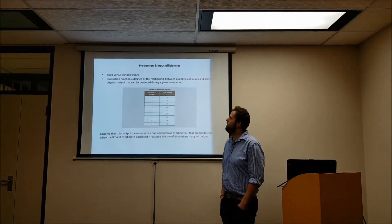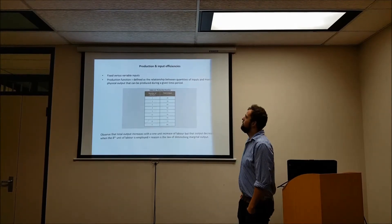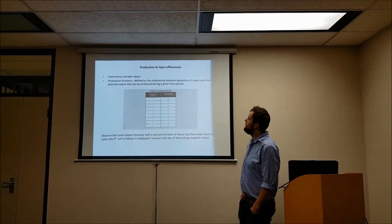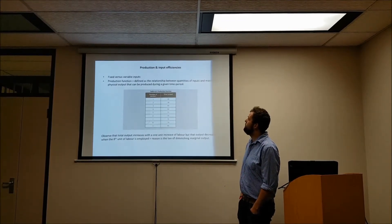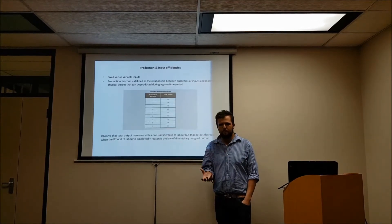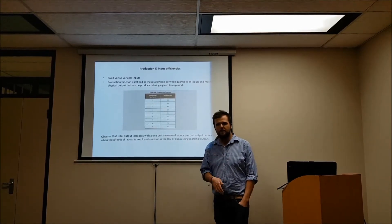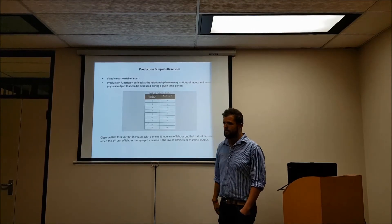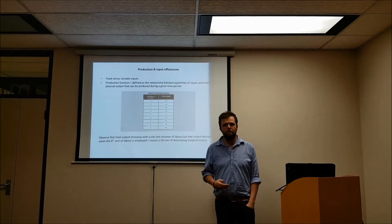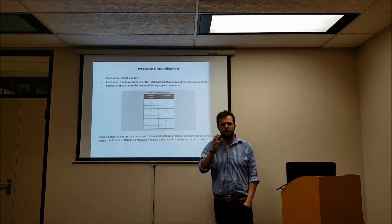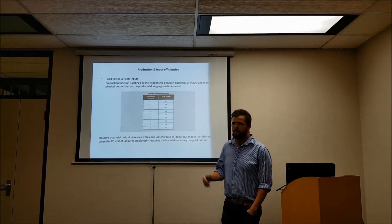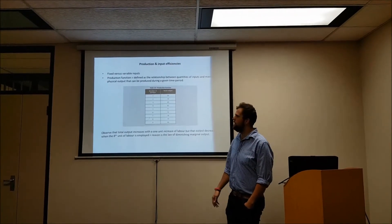Both these variable and fixed inputs relate to the production function. The production function is just a combination of different relations between quantities of inputs and maximum physical output. It's all about how much input you put into the production process and what output you're going to get out. This is important to relate to a firm — whereas previous sections focused on consumer behaviour, now we're looking at a firm's inputs and outputs.